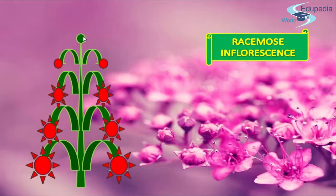Determinate inflorescence is seen in cymes. Cymes are flat-topped inflorescences in which the central flowers open first, followed by the flowers on the peripheral side. An example is the onion.